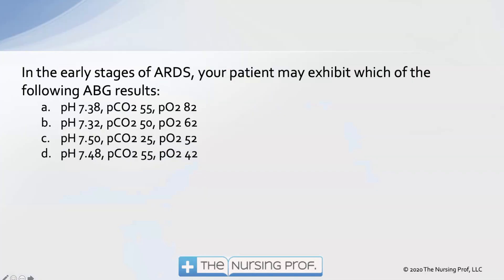In the early stages of ARDS, your patient may exhibit which of the following blood gas results? Our first one: a pH of 7.38, a CO2 of 55, a PO2 of 82. In the second one: a pH of 7.32, a CO2 of 50, and a PO2 of 62.